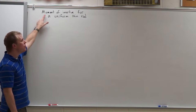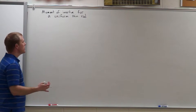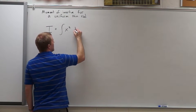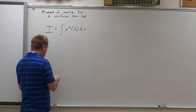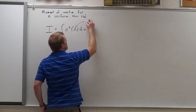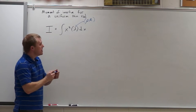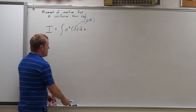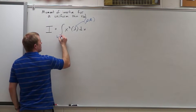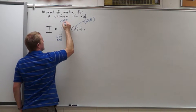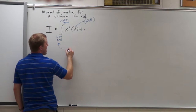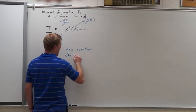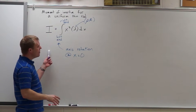Today we're going to look at the moment of inertia for a uniform thin rod. Because we have a continuous object, we're going to have to do an integral. The moment of inertia is going to be the integral of x squared times lambda dx. This lambda value, because we have a uniform rod, is the density times the cross-sectional area — both constants for a uniform thin rod. We integrate from the left end to the right end, with the axis of rotation at x equals zero.